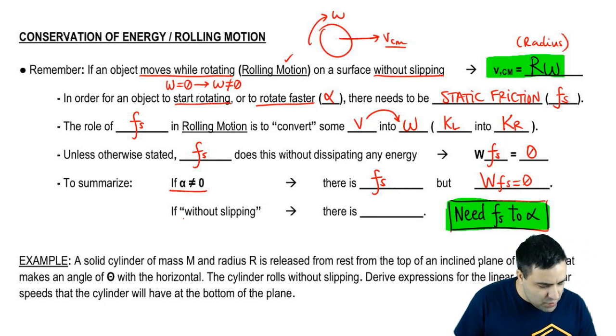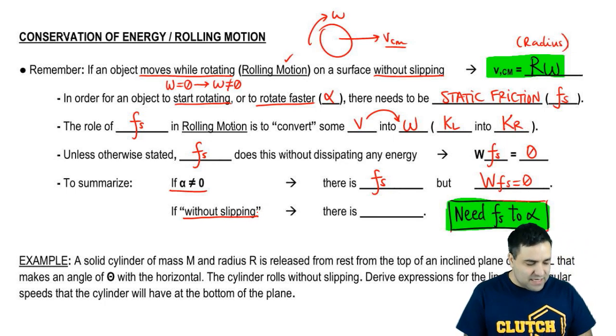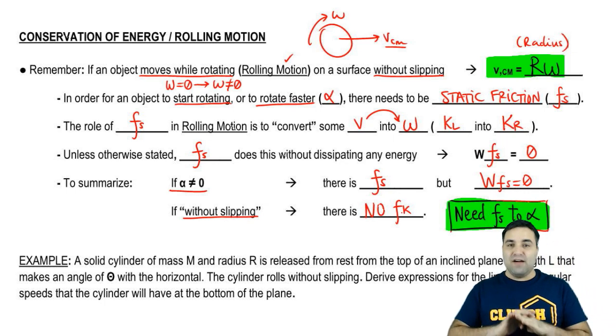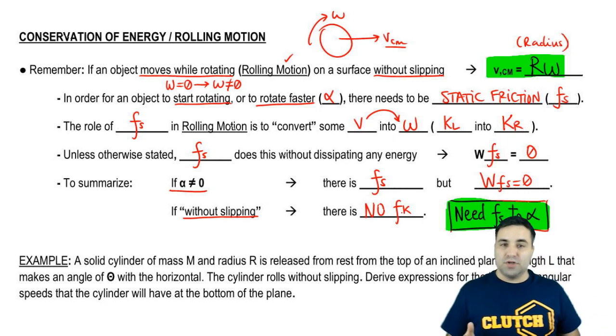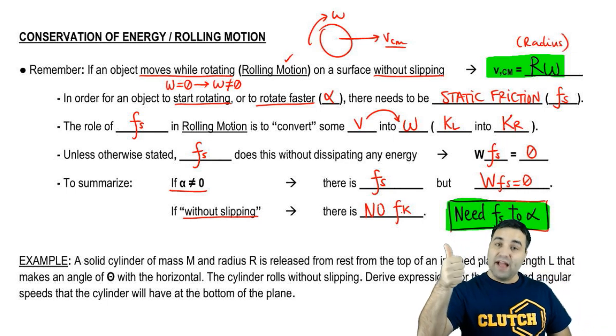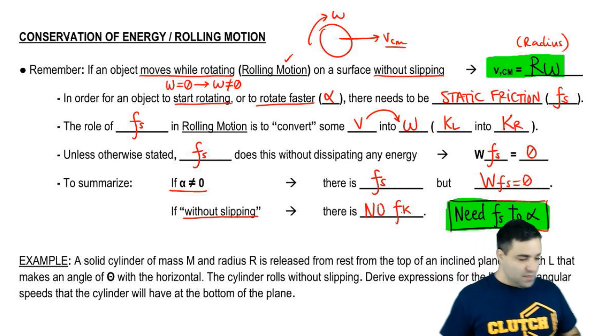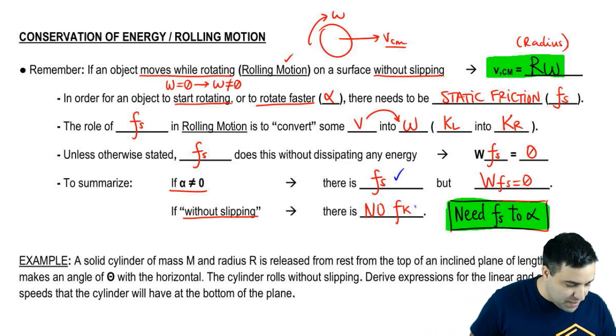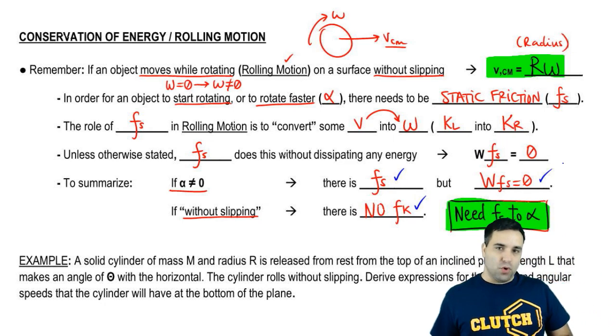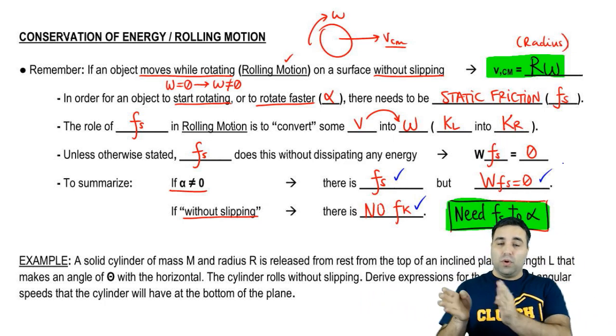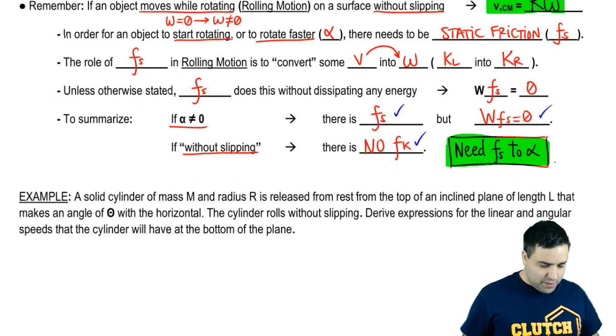Now, the term without slipping means that there's going to be no kinetic friction. And a vast majority of rotation problems are going to be, you're going to have some acceleration, but it is going to roll without slipping. So what that means is that you have static friction, but you have no kinetic friction. But even though you have static friction, it doesn't do any work. So when you write the conservation of energy equation, the work done by static friction is zero. Let's get started.